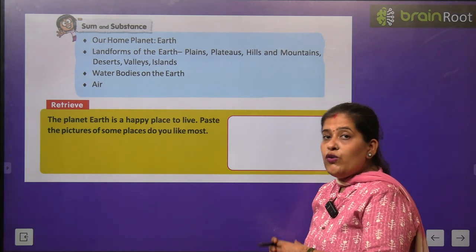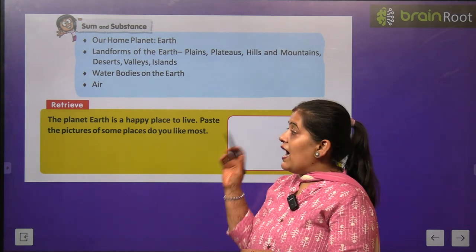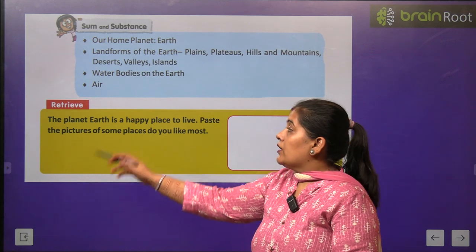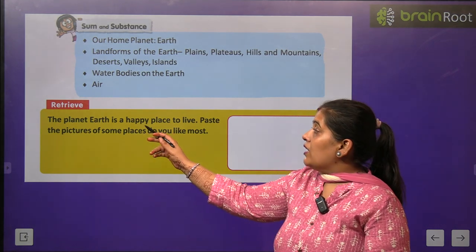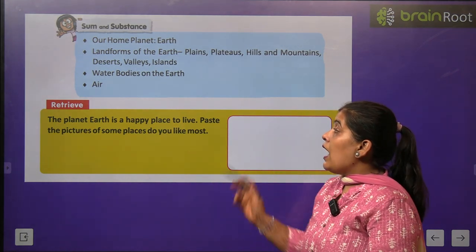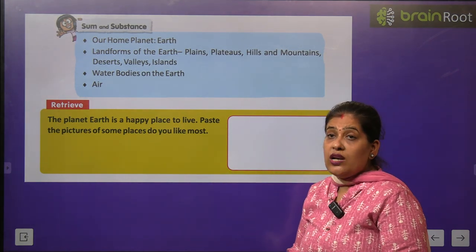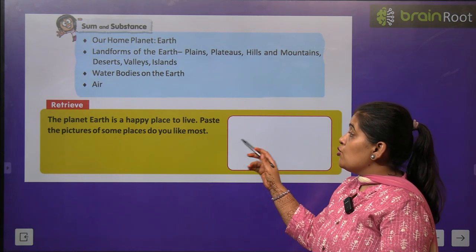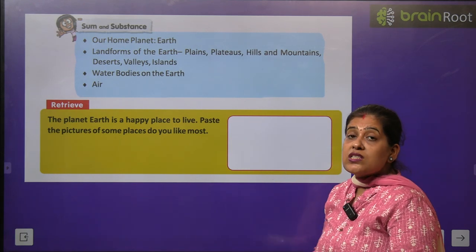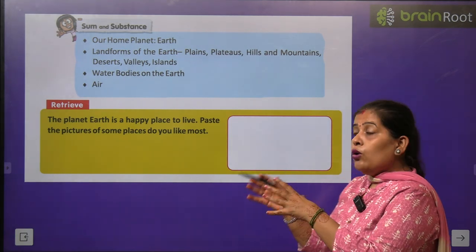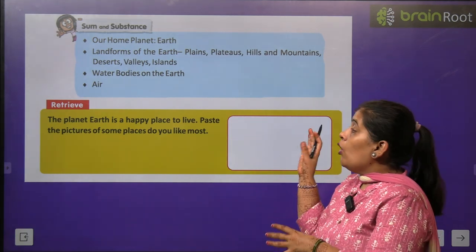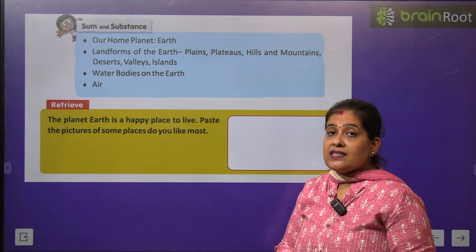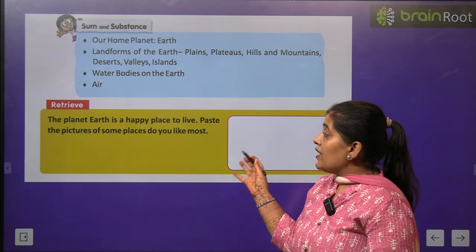Before we start the chapter, first we have to do one activity. The planet Earth is a happy place to live. Paste the picture of some places you like most. Aapko yahaan pasandida places ki picture paste karni hai.